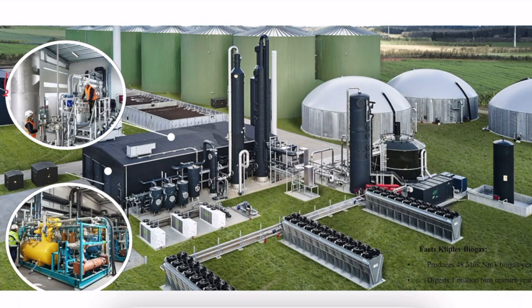For flue gas plants, the stream would be roughly 10% CO2, 7 to 10% oxygen, varying based on the amount of excess oxygen used in the burning process. Some hydrocarbons, some nitrous oxides, and some sulfur oxides. The bulk of the gas would be nitrogen, up to 70% or higher.